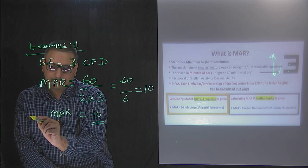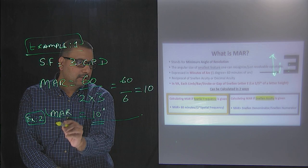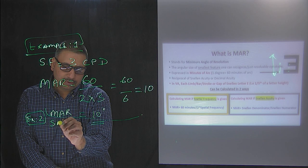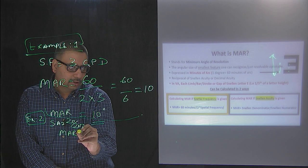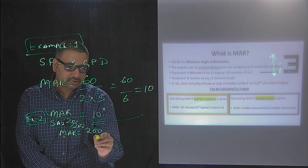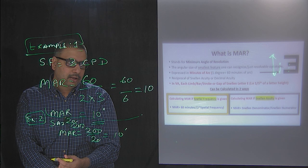In Example 2, let's say you have a letter where the Snellen acuity is 20/200. You want to calculate the MAR. You apply the formula: MAR = Snellen denominator divided by Snellen numerator = 200/20 = 10 minutes. So it is very easy to calculate MAR when you have Snellen acuity — it is just Snellen denominator divided by Snellen numerator.